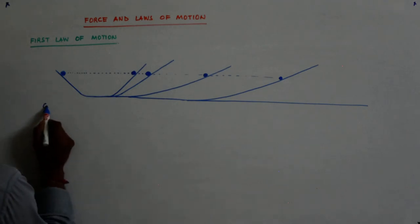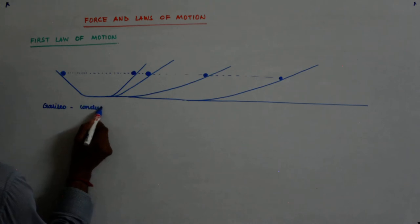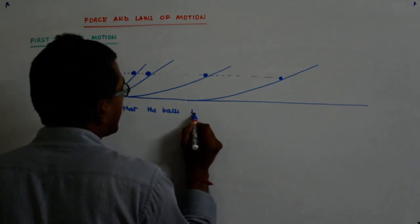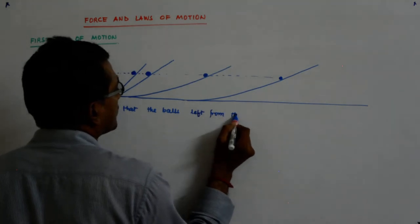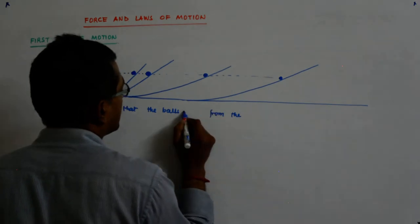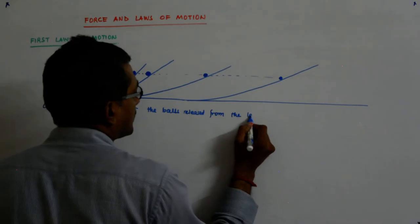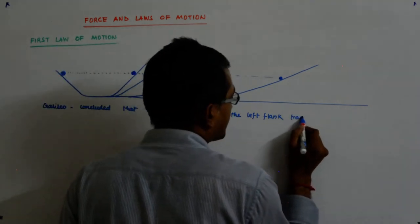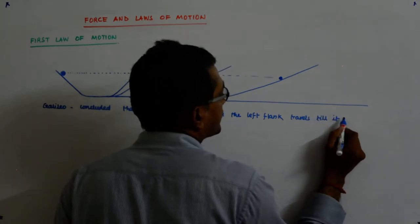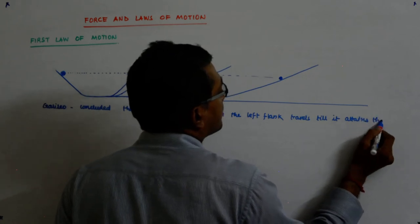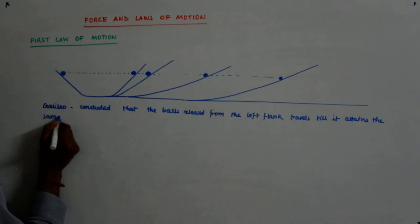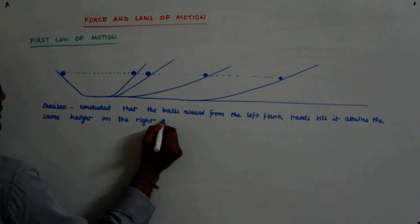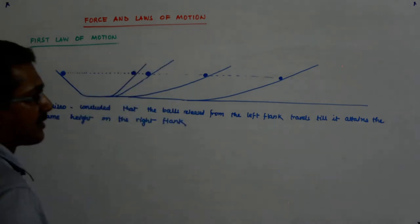So Galileo concluded that the balls released from the left flank travels till it attains the same height on the right flank.